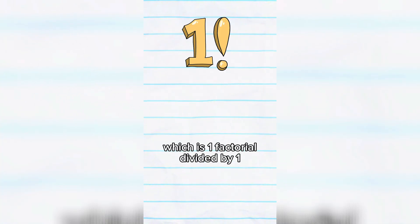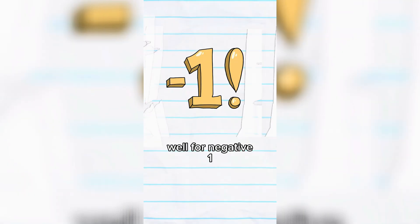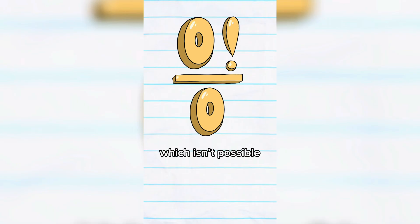1 factorial, and finally, 0 factorial, which is 1 factorial divided by 1, so 0 factorial is 1. But what about negative factorial? Well, for negative 1, we get 0 factorial over 0, which isn't possible.